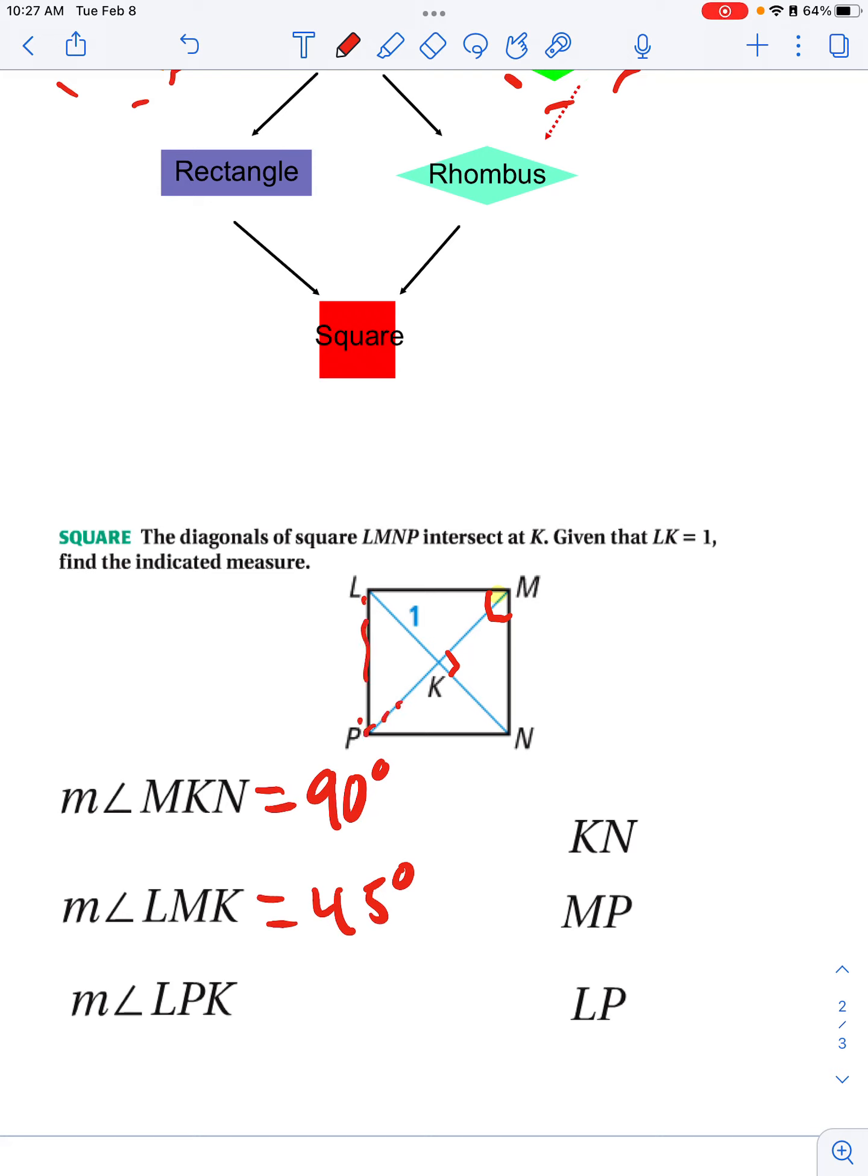Kind of the same idea for angle LPK. Again, it's going to be cut in half. You could also look at it as, hey, I have two parallel lines cut by a transversal. How would these two angles be related to each other? They would be alternate interior angles, which are congruent, so I know that they have to be the same.